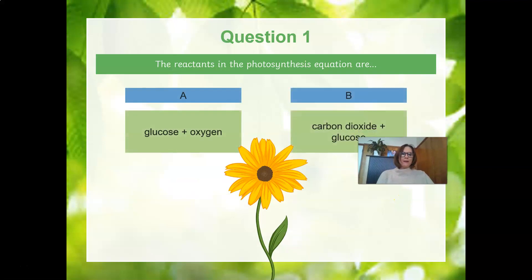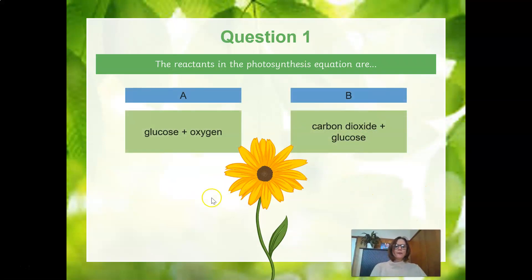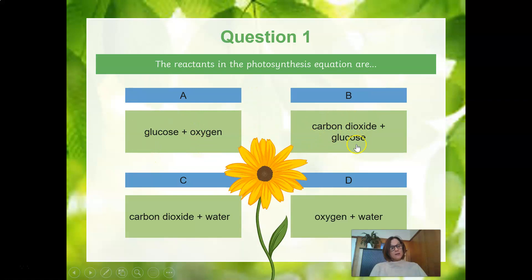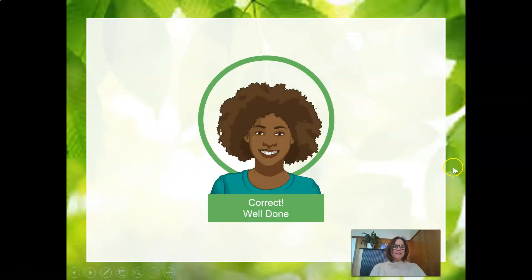Let's take a look at question one. What are the reactants in the photosynthesis equation — what do we need to react in order for photosynthesis to take place? Is it glucose and oxygen, carbon dioxide and glucose, carbon dioxide and water, or oxygen and water? The answer is C — carbon dioxide and water.